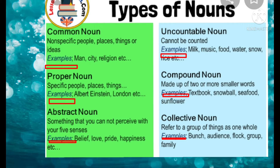First of all, let us see common noun. Common noun refers to non-specific people, places, things, or ideas. Examples: man, city, religion.